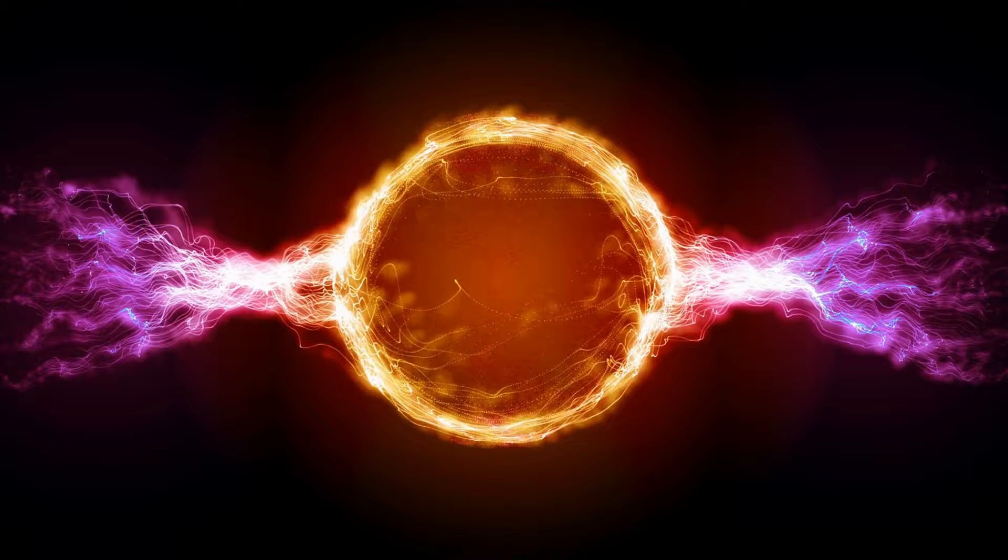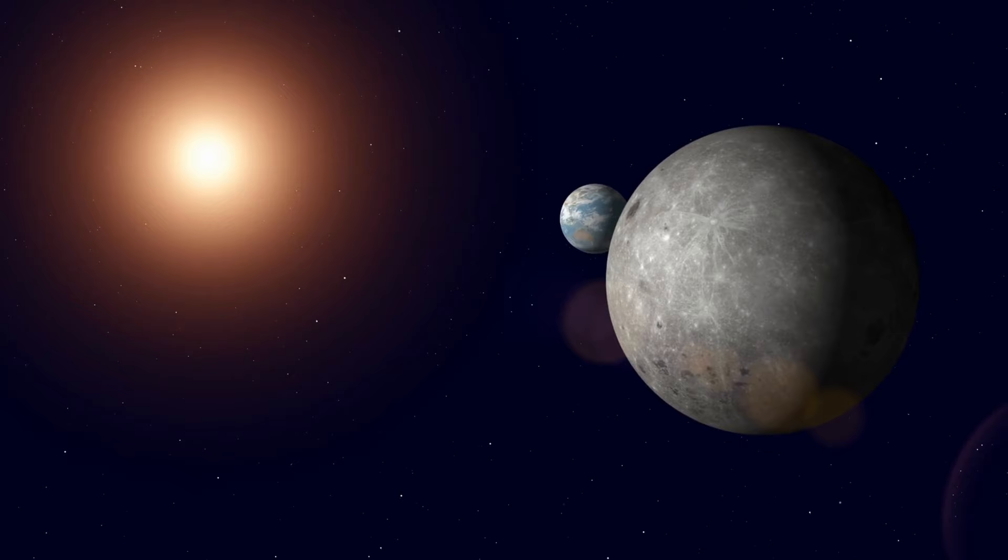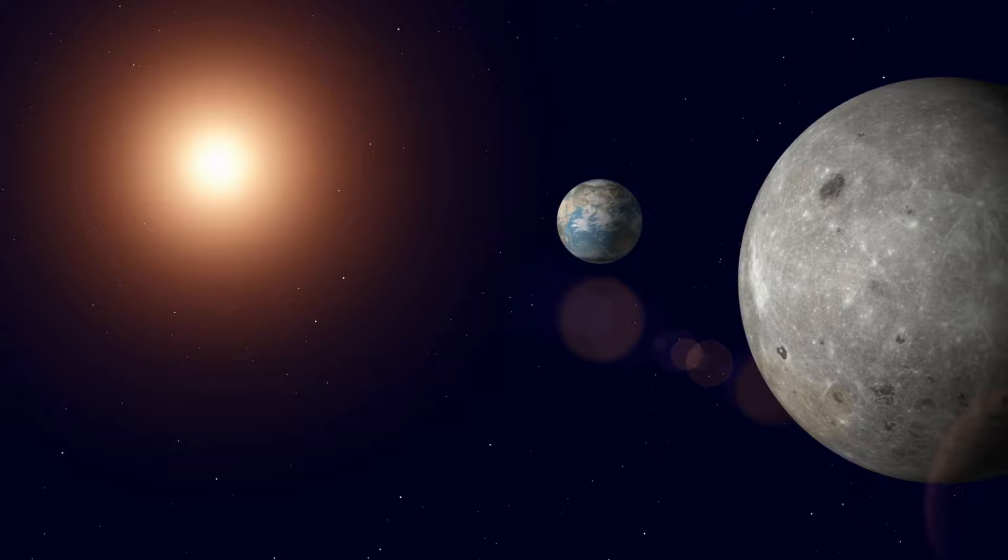What unfolded next was a testament to the power of scientific inquiry. The team managed to measure this g-factor with an unprecedented level of precision, down to nine significant figures. This level of accuracy is akin to measuring the distance from Earth to the Moon with an error margin of just a few millimeters. Absolutely mind-boggling.